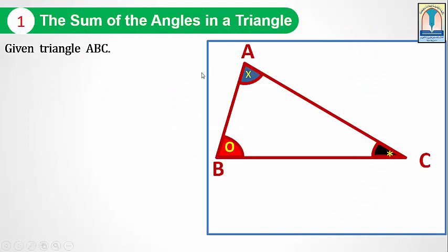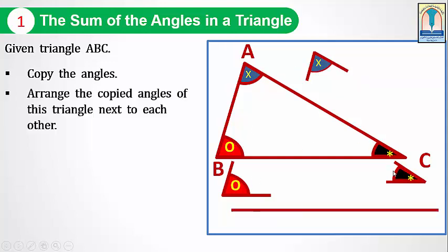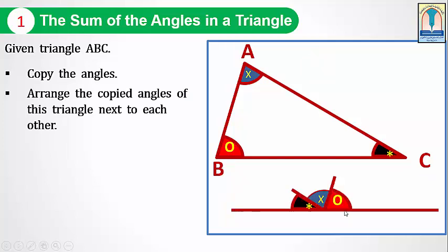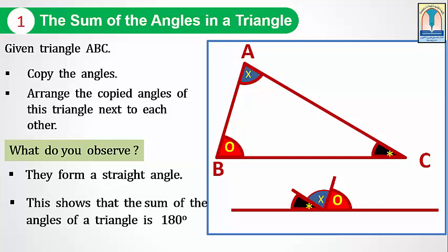The sum of angles in a triangle. Given here a triangle ABC, I will copy each angle — angle A, angle B and angle C — and arrange these angles on this straight line: angle C, angle A and angle B. What can you observe? The three angles form a straight angle. The measure of a straight angle is 180 degrees, so the sum of angles in any triangle is equal to 180 degrees.